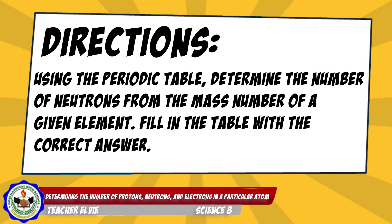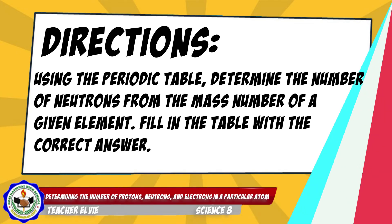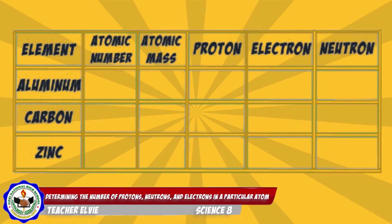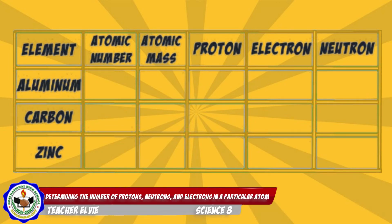For the mastery of the subject matter, let us do the last activity. Directions: Using the periodic table, determine the number of neutrons from the mass number of a given element. Fill in the table with the correct answer. I will give you 20 seconds to finish the activity. Time is up! Let us check if your answers are correct. For element number 1, Aluminum: the atomic number is 13, atomic mass is 27, number of protons is 13, number of electrons is 13, and the number of neutrons is 14.